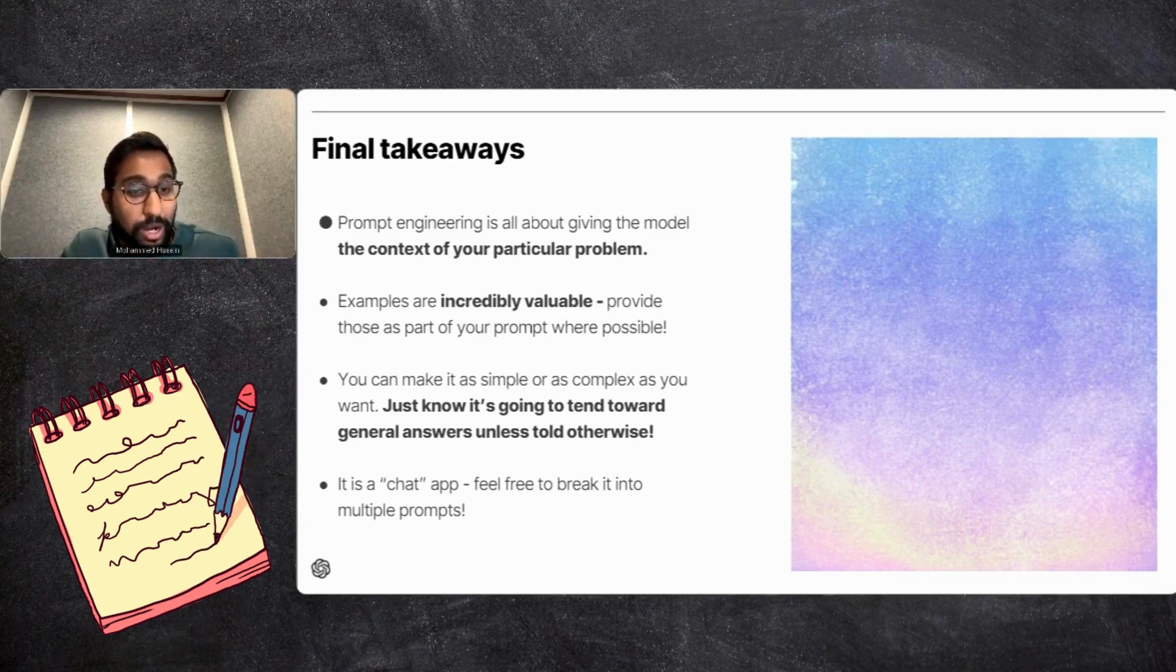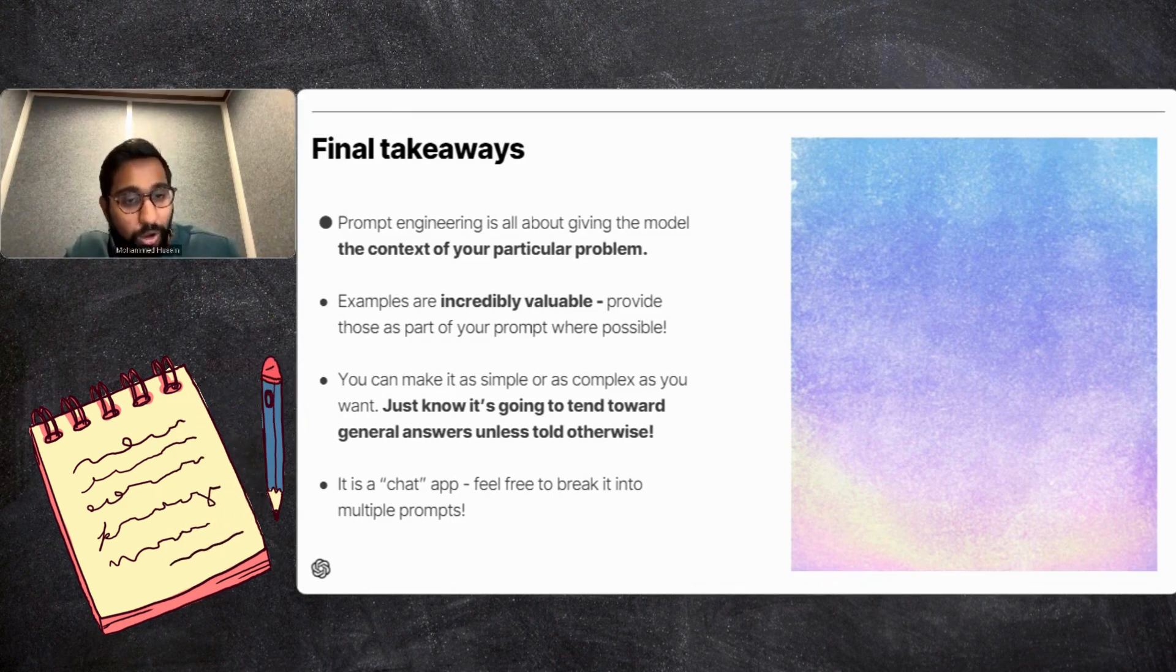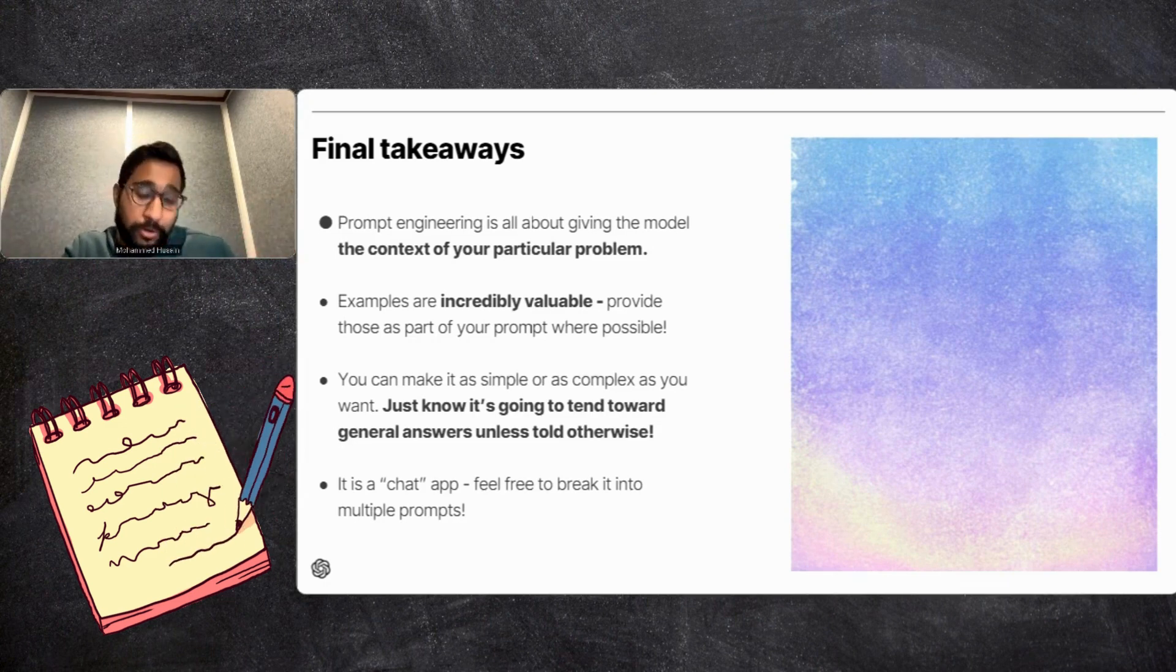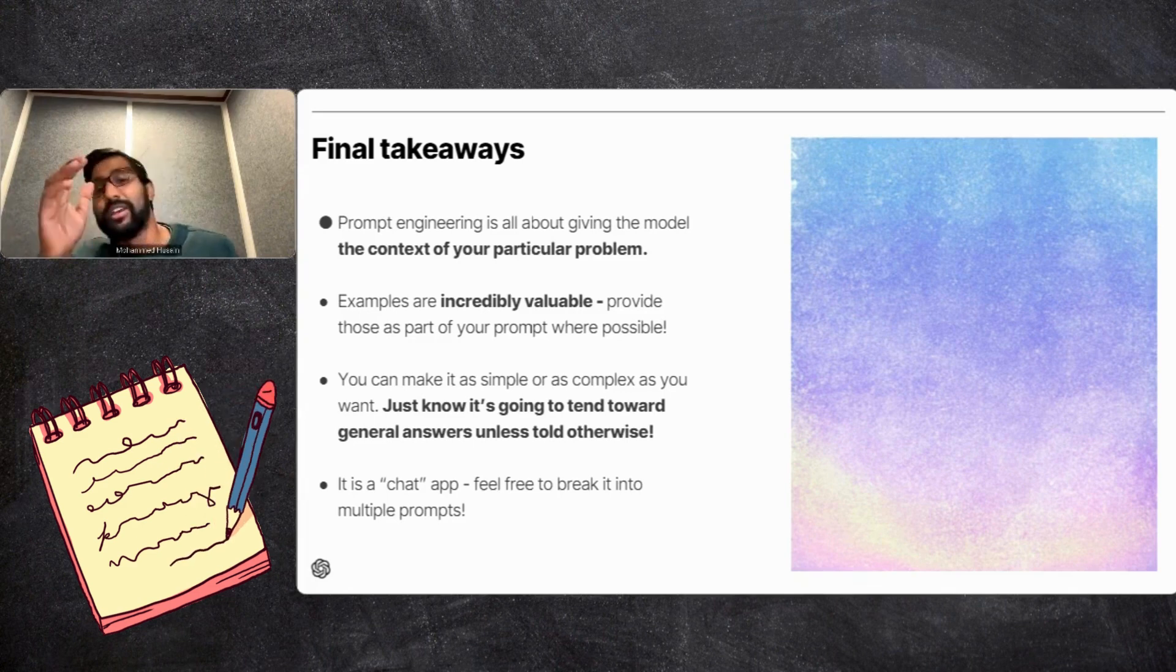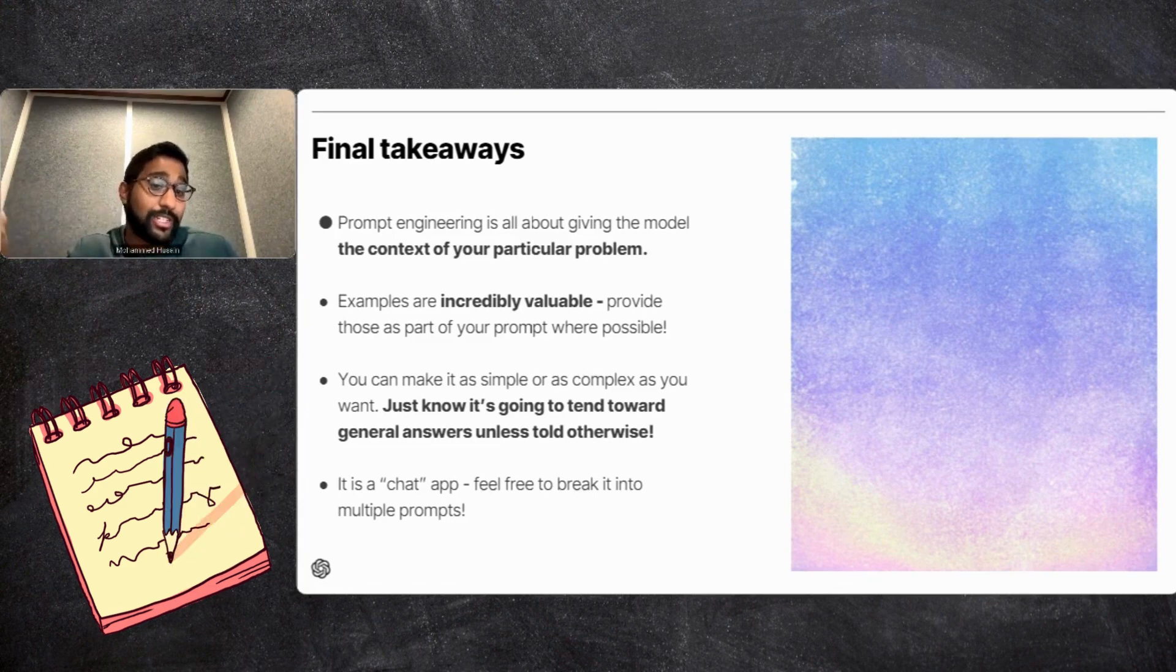You can make these prompts as simple or as complex as you want. Just know that it's going to tend toward general answers. So for example, if you're looking for restaurant recommendations for a birthday, it's my birthday tomorrow, so I want to find a birthday restaurant in Alexandria, Virginia. I don't have to type out this 10 paragraph prompt to assume the role of the expert restaurant recommendator. You don't have to do all that. You can just say 'give me some restaurants around Alexandria, Virginia' and for me that's good enough. I don't need much more information besides a couple of recommendations.